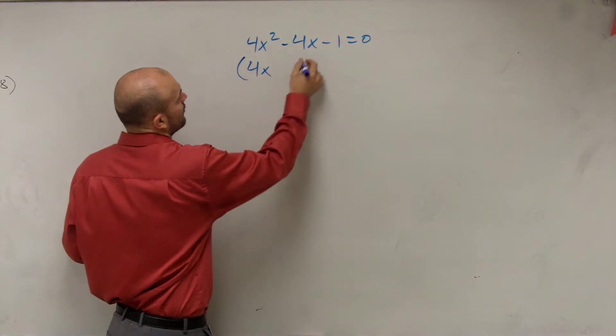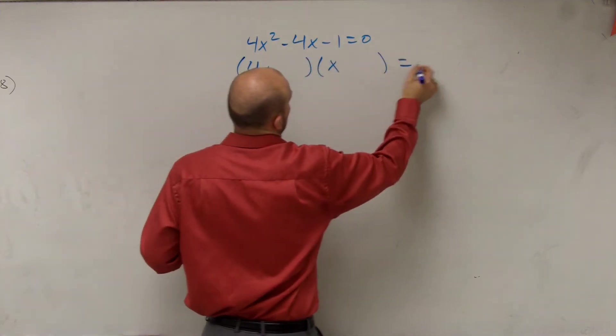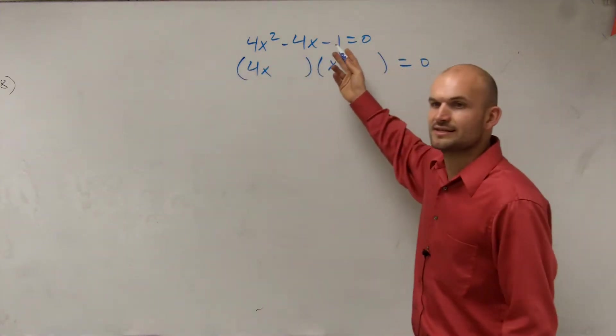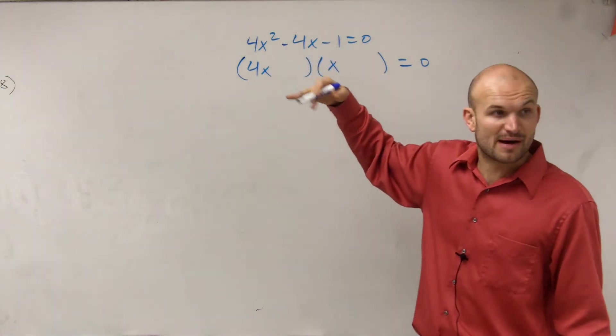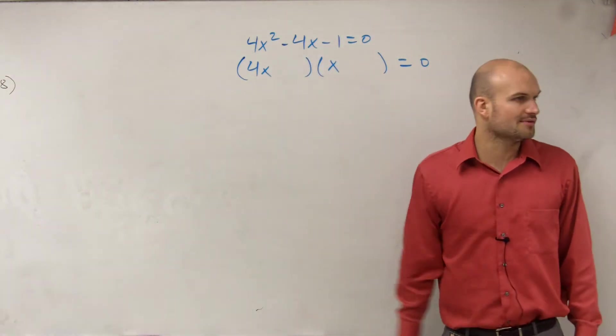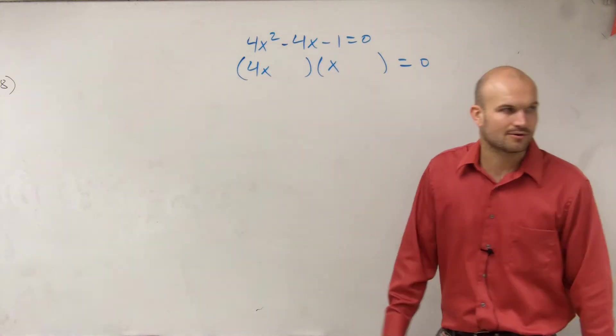So we look at this and say, all right, I could do 4x times x equals 0. And obviously, to get these to be minus 1, one has to be positive, one has to be negative. However, when I try to get my middle terms, guess what? It's not going to work, right?